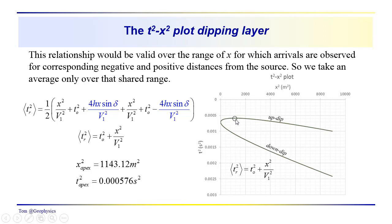If we go through this analysis, picking the apex is going to be more difficult here than it was with the data in the hyperbolic form. But if you do, you find that you get an apex X value of 1140, an X squared apex of 1143.12 meters squared, a T squared apex of .00576.